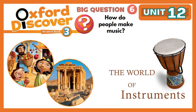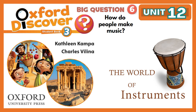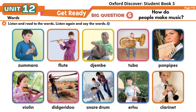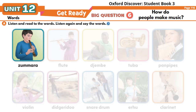Oxford Discover Student Book 3 by Kathleen Campa and Charles Valina, published and copyrighted by Oxford University Press. Page 116, Unit 12: Get Ready. Words — listen and read the words, then listen again and say the words.